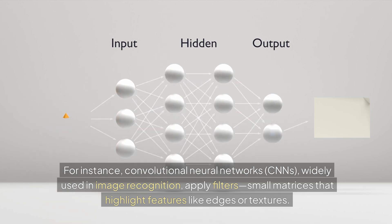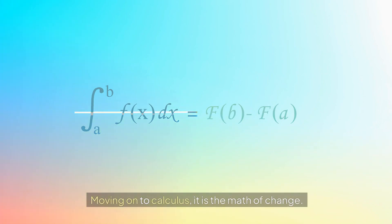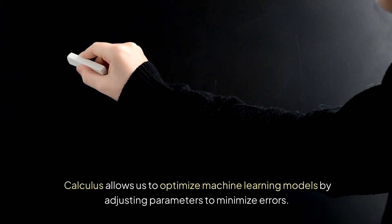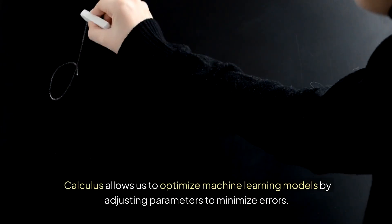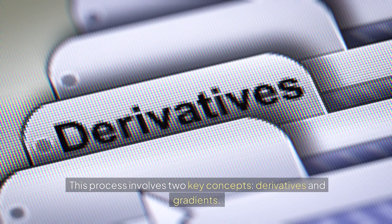Moving on to calculus, it is the math of change. Calculus allows us to optimize machine learning models by adjusting parameters to minimize errors. This process involves two key concepts: derivatives and gradients.